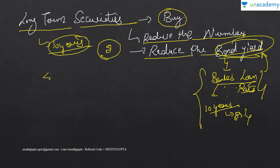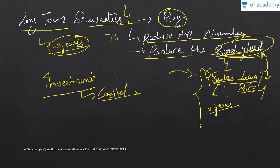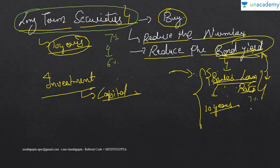For our economy, long-term investment and capital investment are important. So if RBI reduces long-term bond yield, long-term bank loan rates will also automatically decrease. This means big businessmen can get cheaper long-term loans. For instance, if long-term interest was around 7% and RBI buys long-term securities bringing bond yield to 6%, then big business loan rates also fall from 7% to 6%.